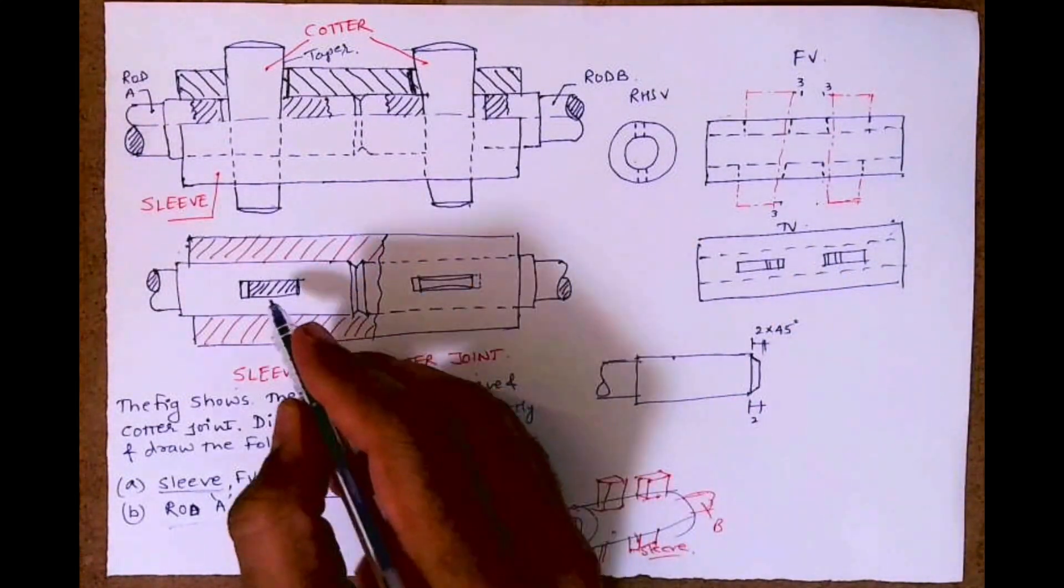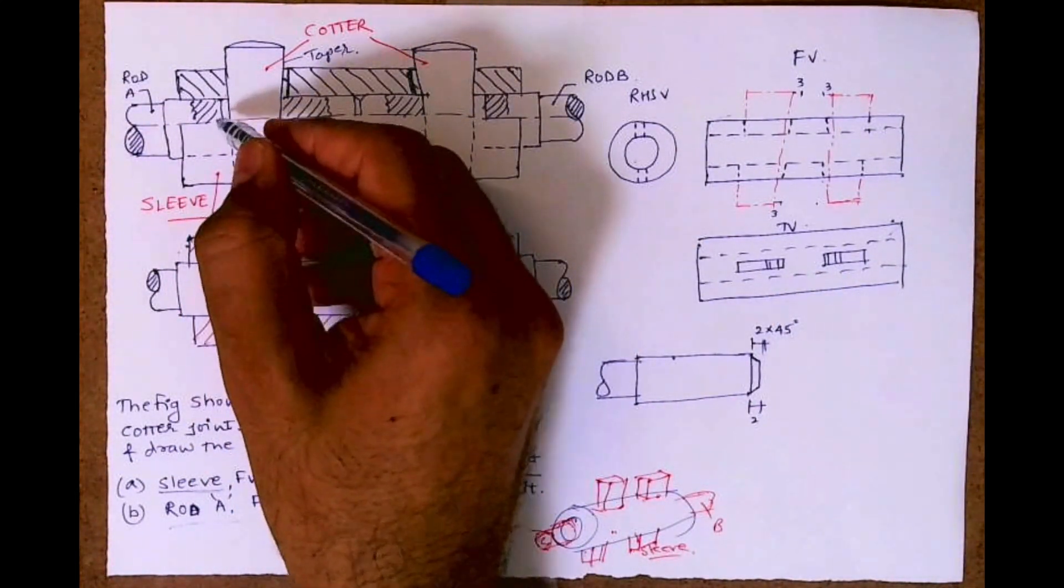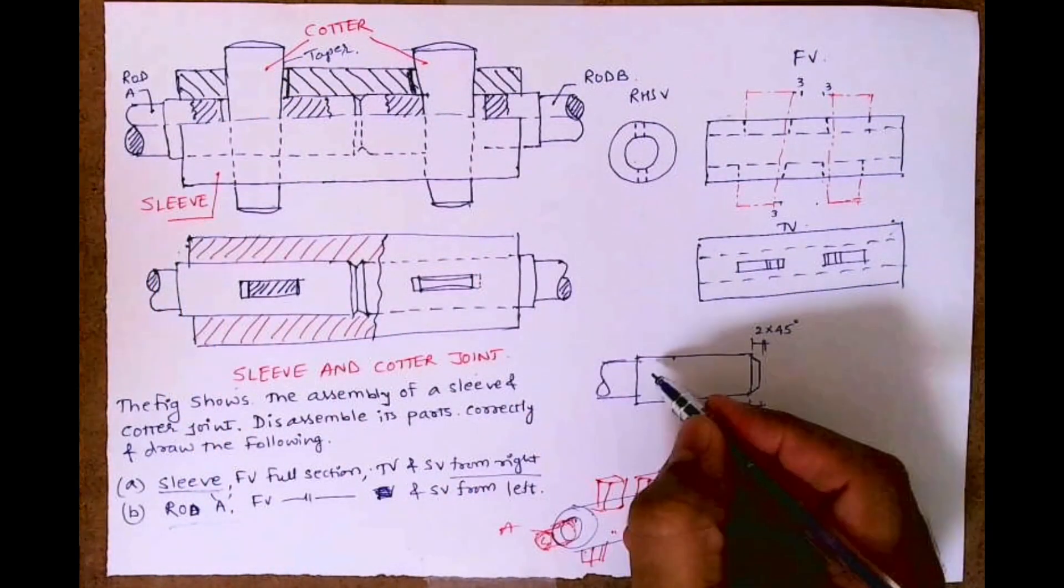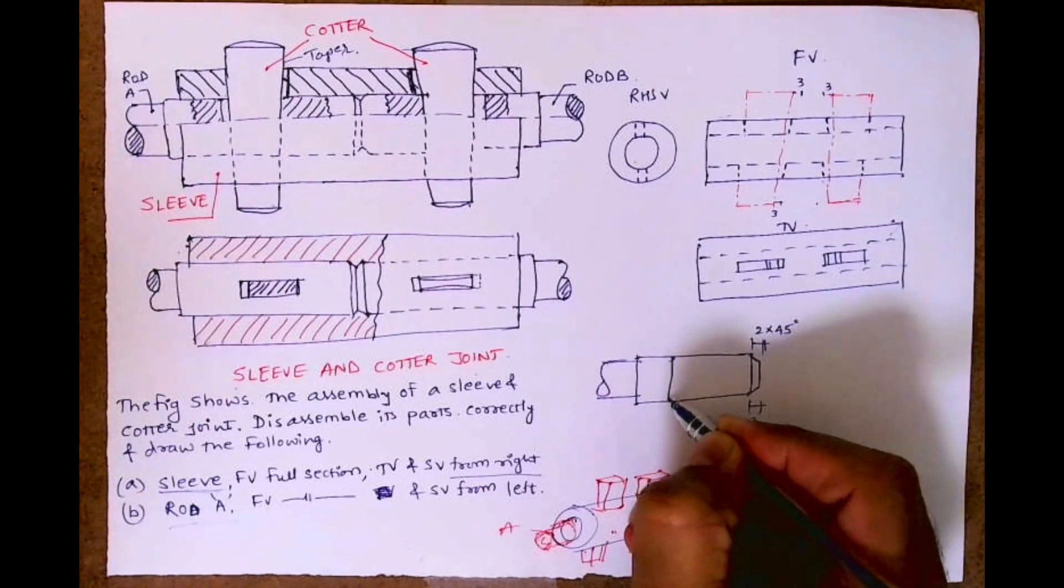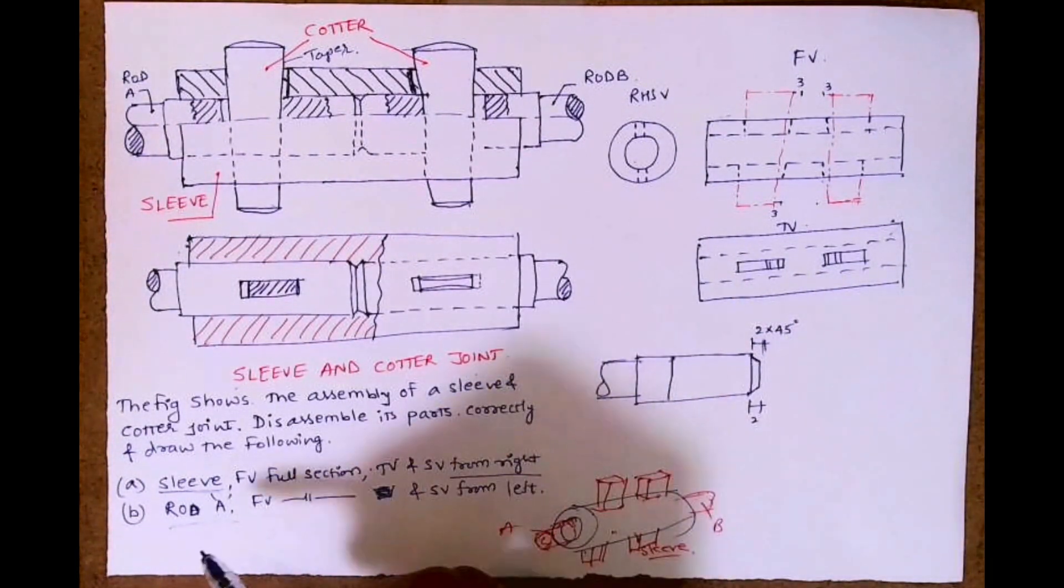It will be there, the dimension will be there. Now this dotted line, it will be dark, and rod will be drawing it dark because we have to do full section, right?